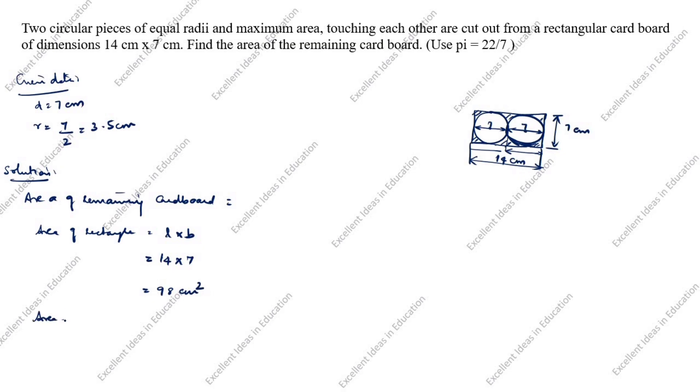Next, area of circle formula. What is area of circle formula? Pi R square. But in this case, 2 circles are there, so into 2. 2 into pi, you see in this question 22 by 7.